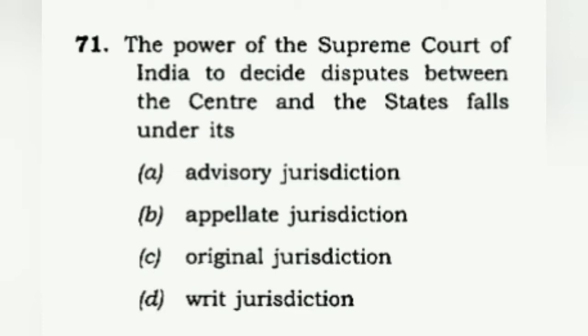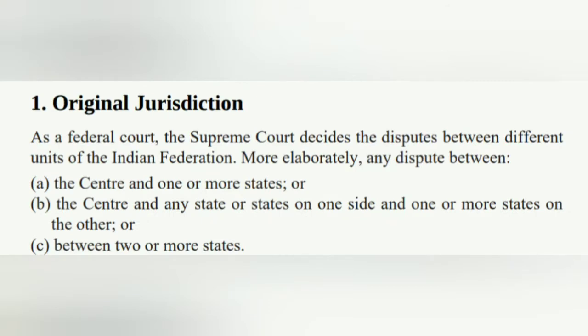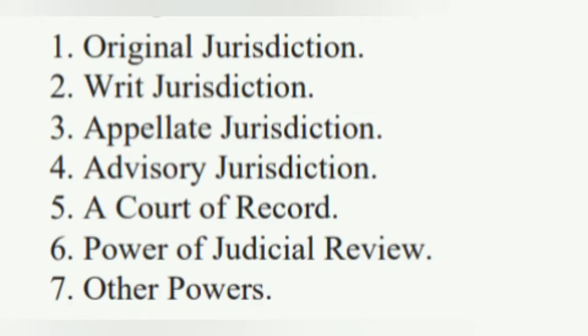The power of the Supreme Court of India to decide disputes between the center and the states falls under its advisory, appellate, original, or writ jurisdiction? This is a clear-cut answer if you've read polity. It falls under original jurisdiction. According to Laxmikanth's Indian Polity, the original jurisdiction of the Supreme Court covers disputes between center and states, between states on one side and other states, and between two or more states. Other powers include writ jurisdiction — habeas corpus — appellate jurisdiction for appeals from lower courts, advisory jurisdiction where the Supreme Court advises the president, court of record, and power of judicial review. Make sure to revise this.